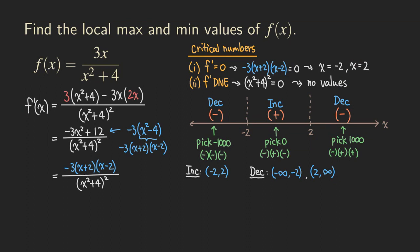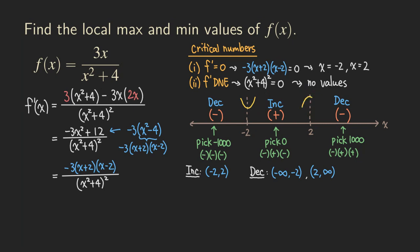Using the first derivative test, we can identify local maxima and minima. At x equals negative two, the function changes from decreasing to increasing, so the curve goes down then up — that's a local minimum. At x equals two, the function changes from increasing to decreasing, giving us a local maximum.